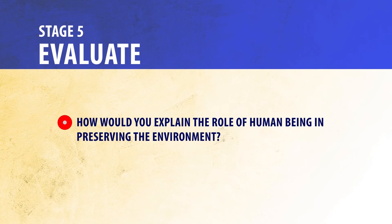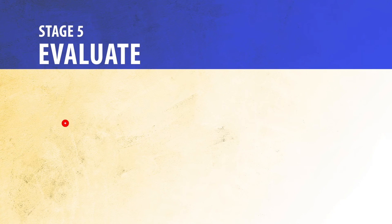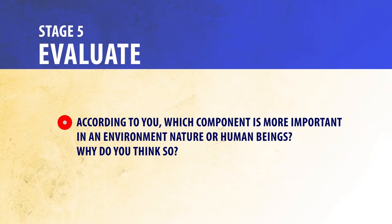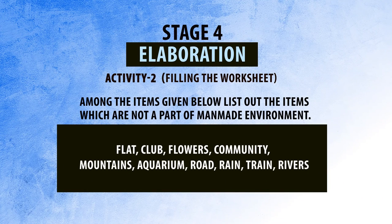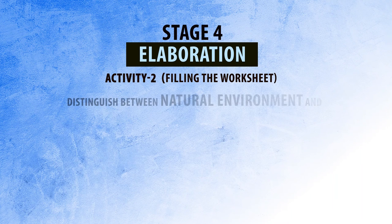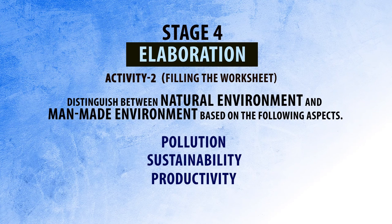Students are asked how they would explain the role of human beings in preserving the environment — this could take the form of a seminar presentation or essay writing competition. They are also asked which component is more important in the environment — nature or human beings — and why, requiring critical analysis. Following worksheets are given: list out items which are not part of man-made environment from a given list; and distinguish between natural environment and man-made environment based on aspects such as living things, non-living things, pollution, and sustainability.